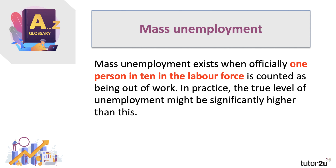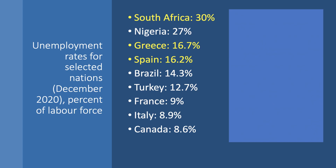Now, of course, in practice, unemployment may well be significantly higher than this. But mass unemployment is basically one in ten being out of work. Here are the data for selected nations in December 2020. Look at those figures for South Africa and Nigeria — over a quarter, nearly a third in South Africa, of people are out of work. The true figure is likely to be much higher. And in several European countries, unemployment is either above 10%, such as Greece and Spain, or just a fraction below it in France and Italy.